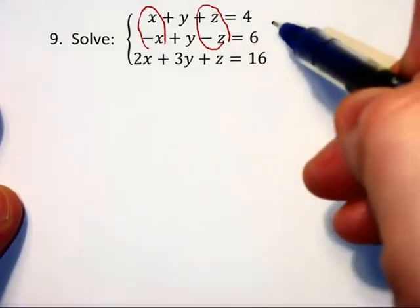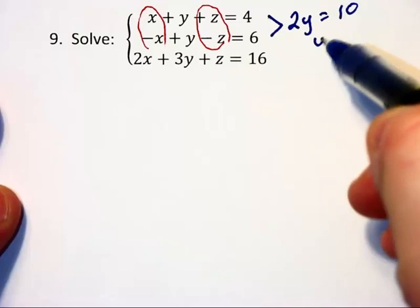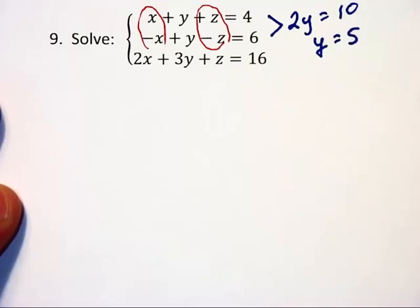that's what we're going to do. Adding them together, we get 2y is equal to 10, and therefore we know right off the bat y will equal 5.